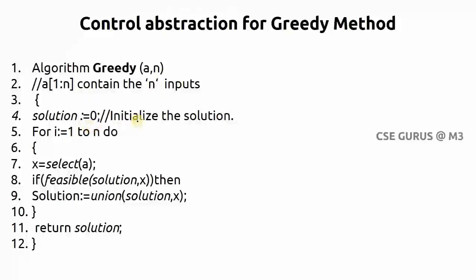Solution initial is zero, that is initializing. For i equals 1 to n, you are selecting the option, that is solutions. If x equals select, that means you are selecting one solution, that means you are selecting a subset of coins. Now, if feasible of solution comma x, that means if whatever you are selecting if it is equals to 66, I am explaining this with our change making example.